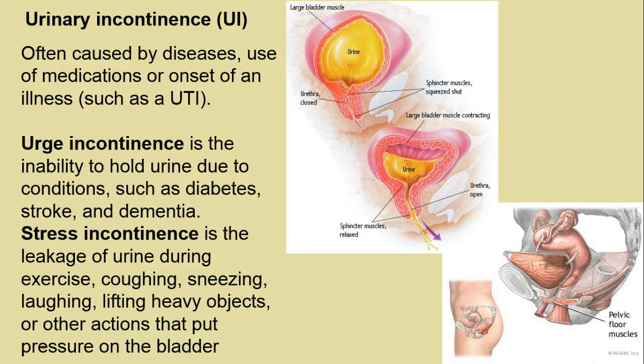Urinary incontinence — caused by lots of diseases. Urge incontinence is often a weakness in the pelvic floor due to diabetes, stroke, or dementia, commonly seen in the senior population. Stress incontinence is also a pelvic floor issue — it happens when there's pressure from coughing, sneezing, or lifting. That's why some women use a pad when doing physical activity.